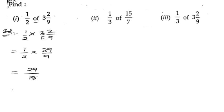So 29 times 1 is 29, 2 times 9 is 18. The result is 29/18, which equals 1 11/18. So this is our first bit. Now let us take the second bit.